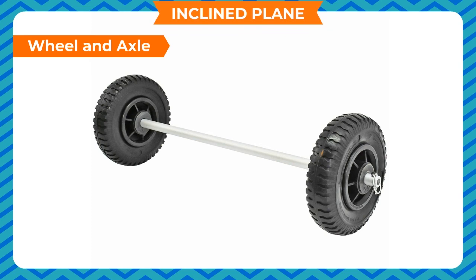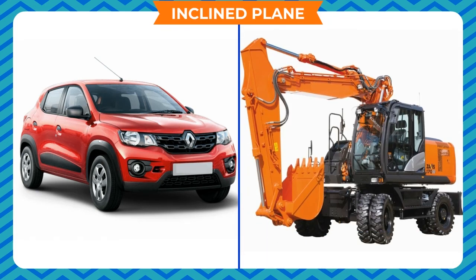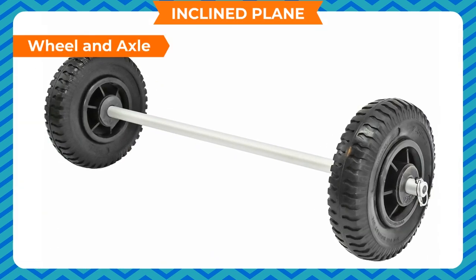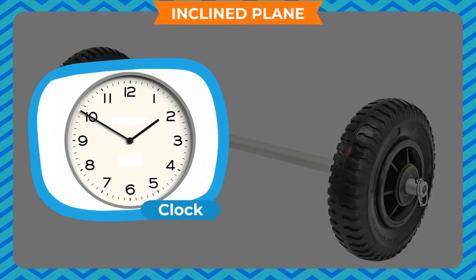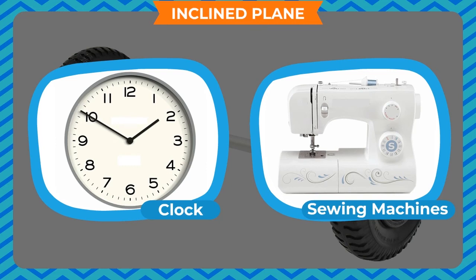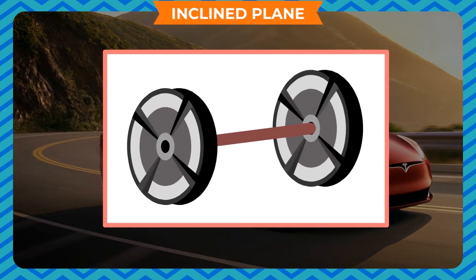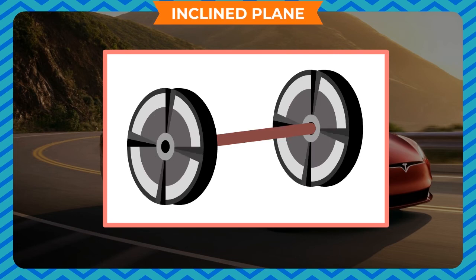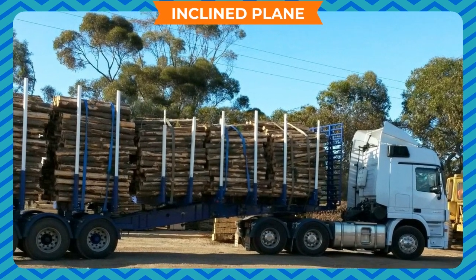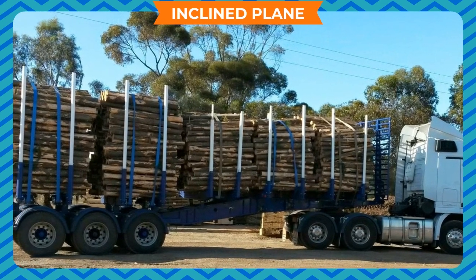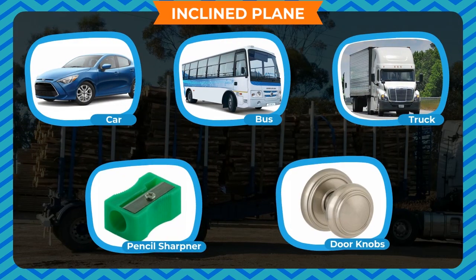Wheel and Axle: We see wheels in vehicles and machines. A wheel and axle arrangement consists of a uniform rod known as the axle with two wheels at one end. Most machines turn other parts through wheels. Clocks and sewing machines are examples where a wheel and axle arrangement is used. The axle rotates with the wheel, so the wheel and axle together form a simple machine, used for lifting and moving heavy loads with lesser effort. Some examples of wheel and axle are wheels of cars, buses, trucks, pencil sharpeners, and doorknobs.